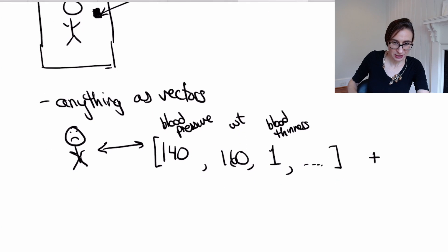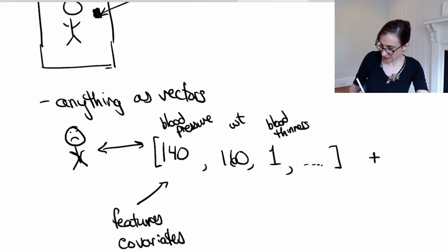This information here, these numbers that represent images or patients or whatever it is, they're called features. They're also called covariates. They're also called explanatory variables, independent variables, predictor variables. They're called lots of different things, but they all are descriptors of the phenomenon we're trying to predict.